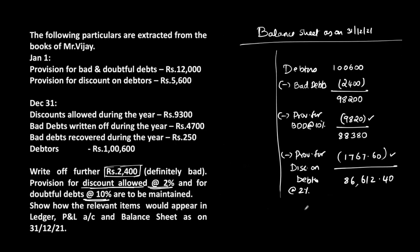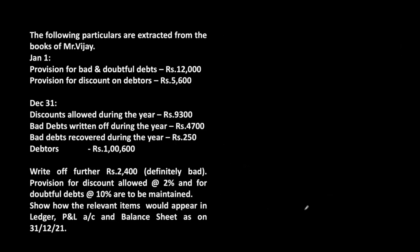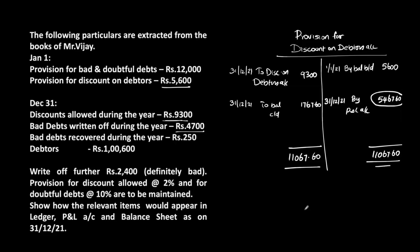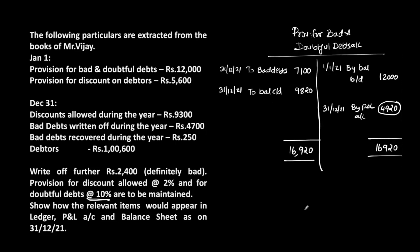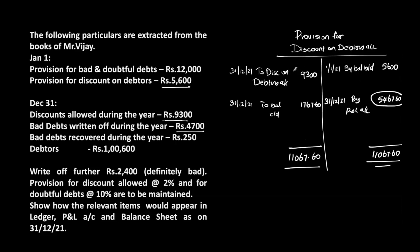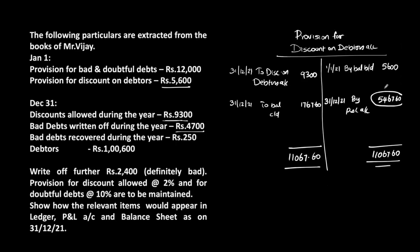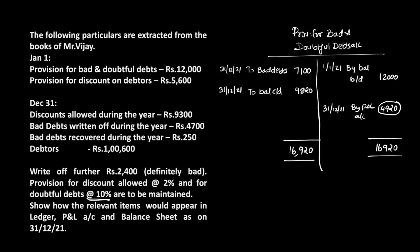We have completed all ledgers — bad debts account, bad debts recovered account, provision for discount on debtors, and provision for bad and doubtful debts — along with P&L and the balance sheet. The unique approach was to capture both bad debts (4,700 and 2,400) as an omnibus entry of 7,100 transferred to provision for bad and doubtful debts, with closing balances derived using the discussed method.